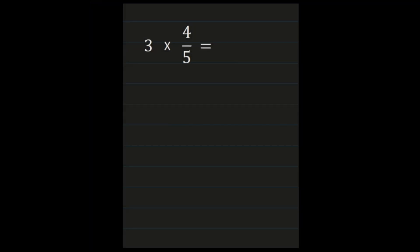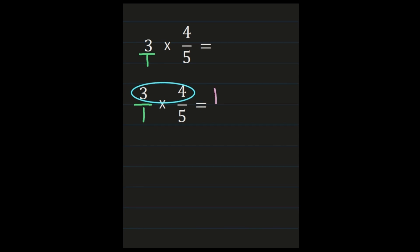For our next example, we have 3 times 4 fifths. Our whole number is in front, but our process remains the same. We need to multiply numerators and multiply denominators, which means that whole number needs to be in fraction form. To turn our whole number into a fraction, we put it over 1. Then I highly suggest rewriting the problem so that your numerators are lined up and your denominators are lined up. Our numerators are 3 and 4 — 3 times 4 is 12. Then we multiply our denominators: 1 times 5.